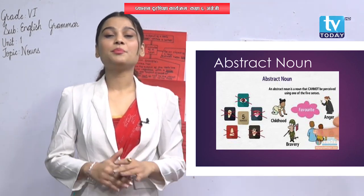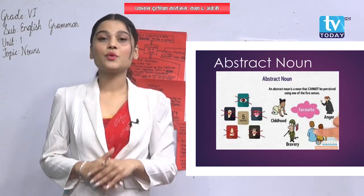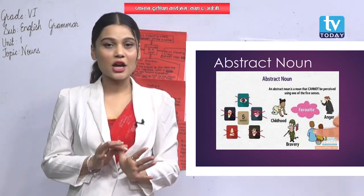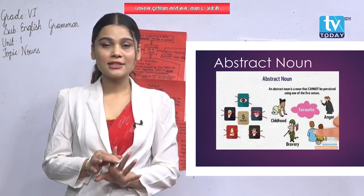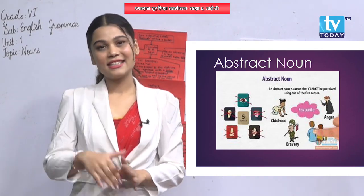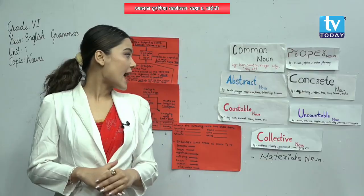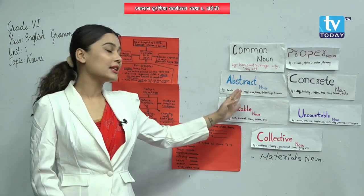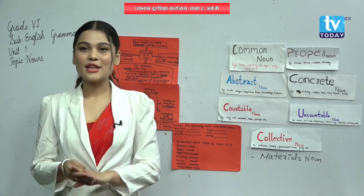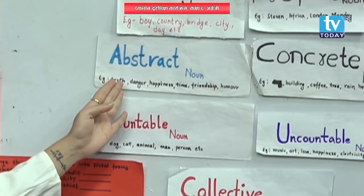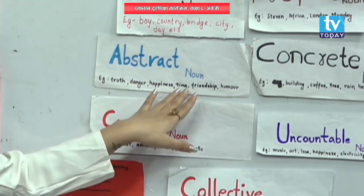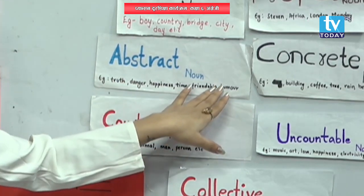We cannot perceive abstract nouns with any of our five senses. We cannot touch it, we cannot feel it, we cannot see it, we cannot hear it, and we cannot taste it. We can only feel the abstract noun, like happiness, sadness, danger. You can look here: truth, danger, happiness, time, friendship, humor.